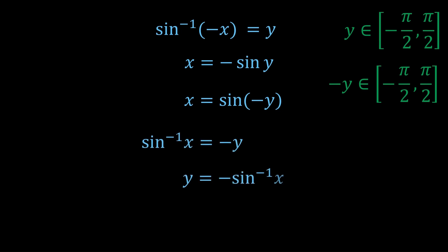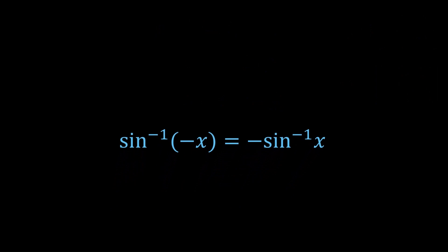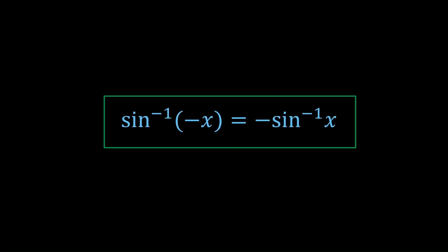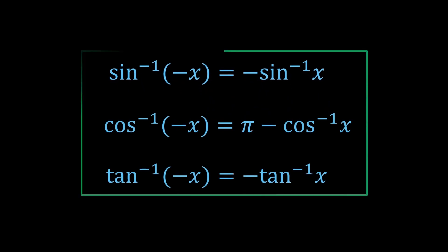We get sin inverse x is equal to minus y. In other words, y is equal to minus sin inverse x. And so sin inverse minus x is equal to minus sin inverse x. So that's one way to show that sin inverse is an odd function. You can do a similar technique to show that tan inverse is an odd function, so I'll leave that to you.